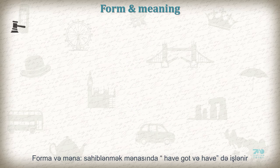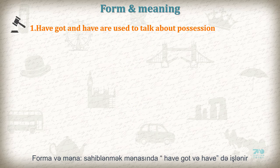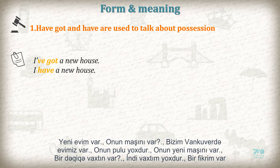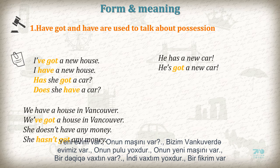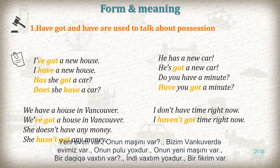Form and meaning. Have got and have are used to talk about position. I have got a new house. I have a new house. Has she got a car? Does she have a car? We have a house in Vancouver. We have got a house in Vancouver. She doesn't have any money. She hasn't got any money. He has a new car. He has got a new car. Do you have a minute? Have you got a minute? I don't have time right now. I haven't got time right now. I have an idea. I have got an idea.